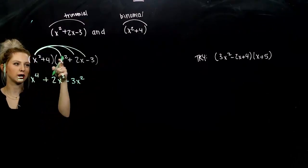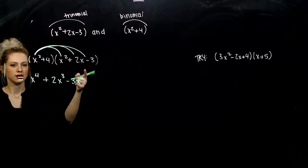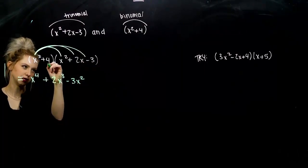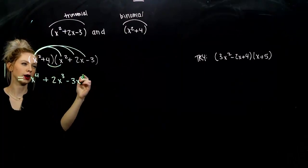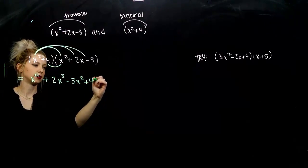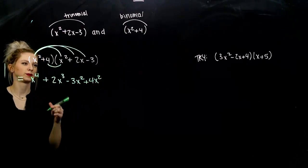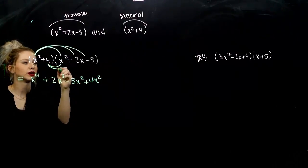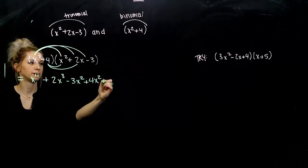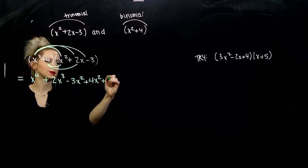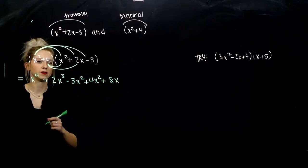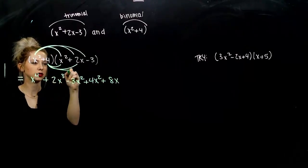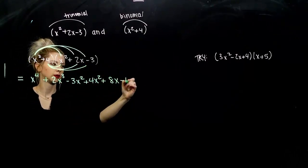So, we took care of the first term here, times each of these. Now, we'll take the second one to each of those. So, 4 times x squared is 4x squared. 4 now times 2x. So, 4 times 2 gives me 8. Got one factor of x. And, 4 times negative 3, minus 12.